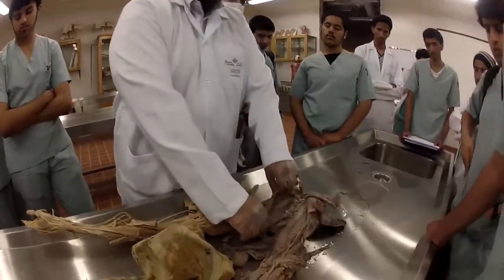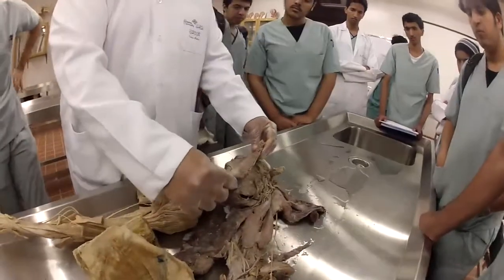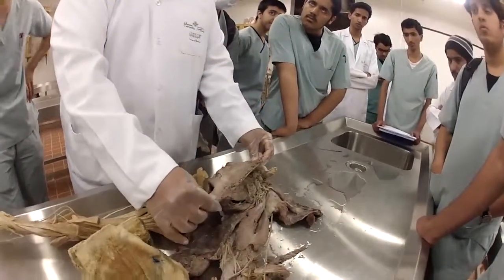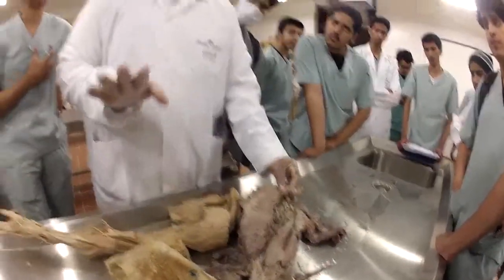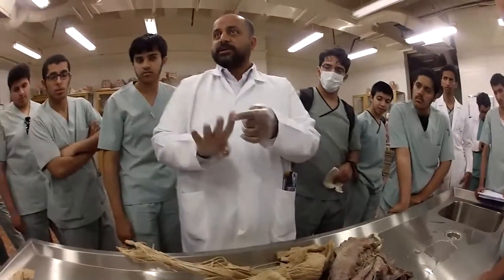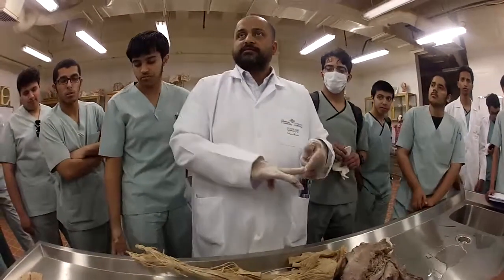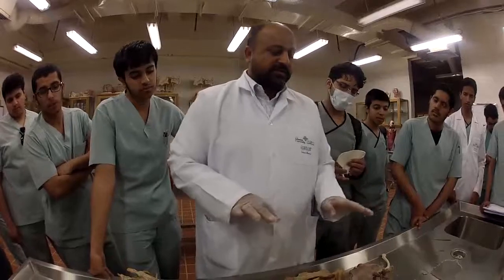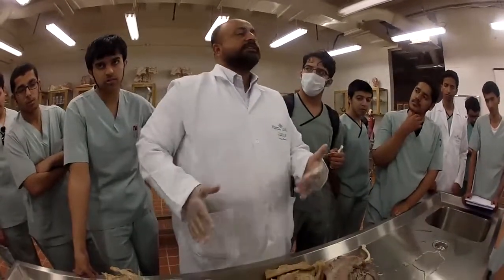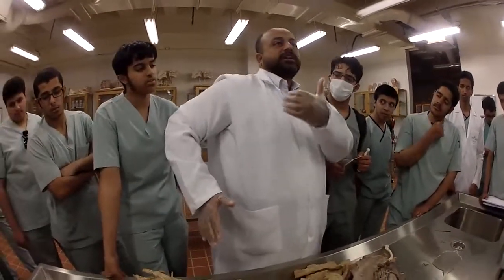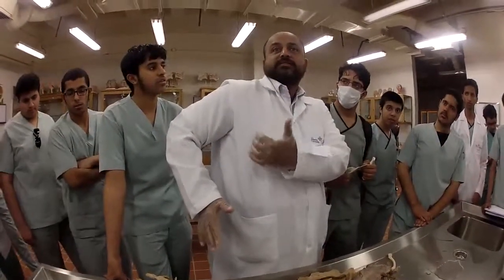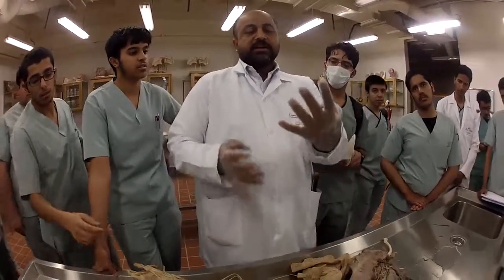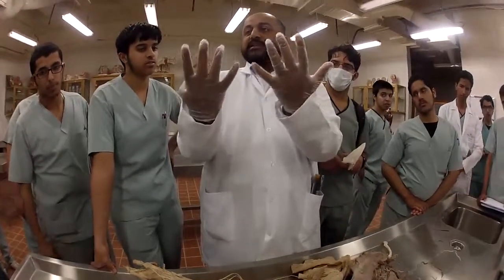The last muscle is serratus anterior — the last muscle of the pectoral region, four muscles total. Major we have done. We have seen minor. Subclavius — now is the serratus. From where does it arise? It usually arises from the first eight ribs — outer surface of the first eight ribs. It arises like serrations.